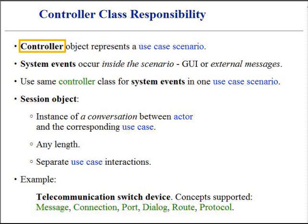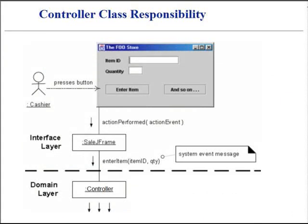The controller pattern provides guidance for generally accepted, suitable choices to solve this task. As illustrated in the diagram, the controller is a kind of facade into the business layer for any message that comes from the interface layer. It is often desirable to implement the same controller class, designed to handle all events of one particular use case, so that it is possible to maintain information about the state of the use case in the controller class. Such information is useful, for example, to identify any system events that may occur outside of expected sequence. Different controllers may be used for different use cases in the application.